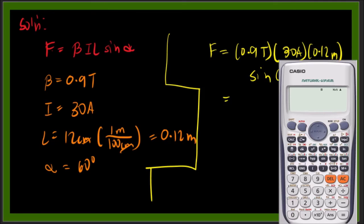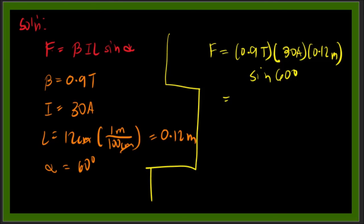We have 0.9 times 30 times 0.12 times sine 60. We need to take note that our calculator must be set up in degrees. We will have 2.81 Newton, so the force is 2.81 Newton.